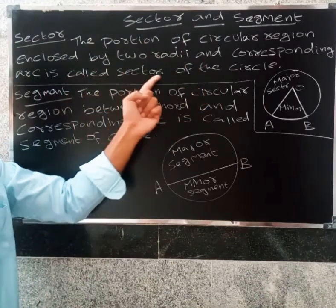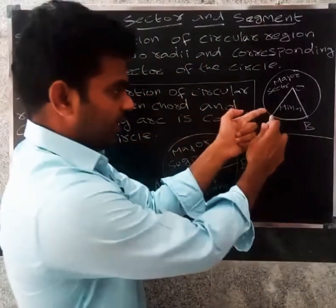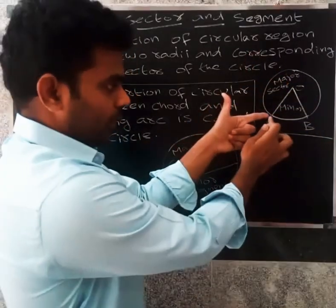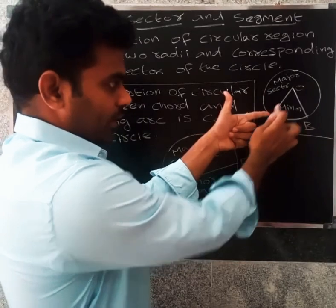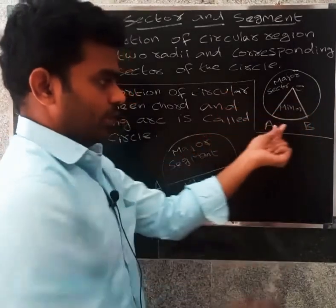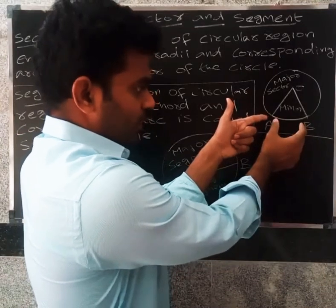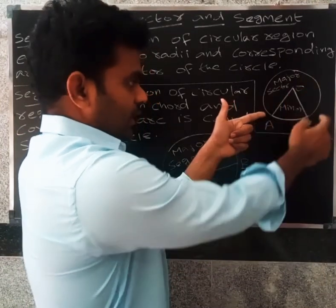So there are two radii, one radius and another radius for a particular arc. The radii enclose that arc. When they meet, they form a sector. There is a minor sector.